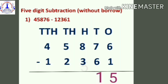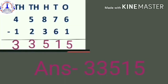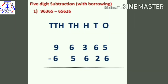Then comes the tens place: seven minus six is one. Then we move to the hundreds place: eight minus three is five. Then the thousands place: five minus two is three. And the last, the ten-thousands place: four minus one is three. So your answer is thirty-three thousand five hundred and fifteen.